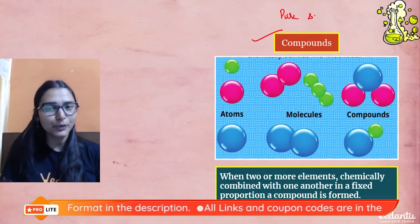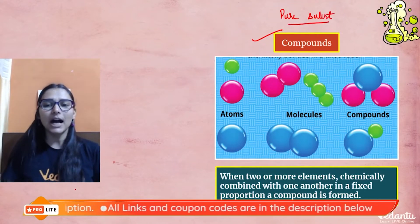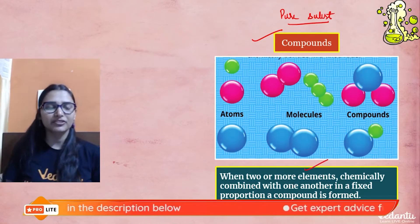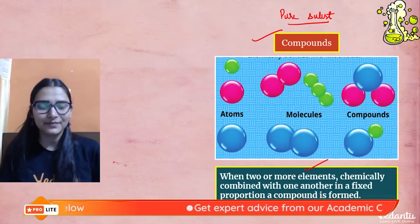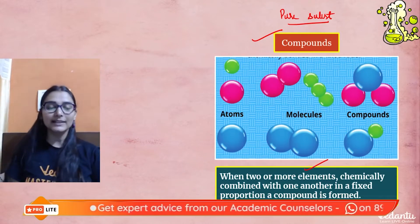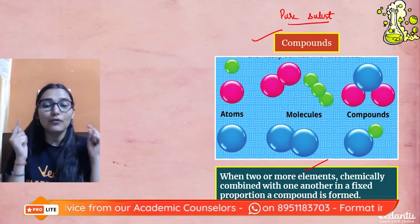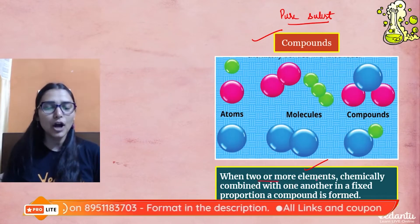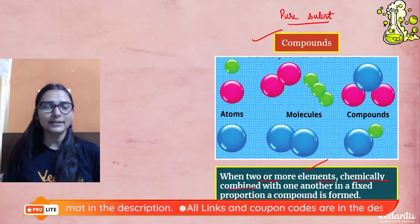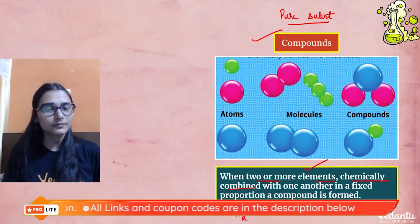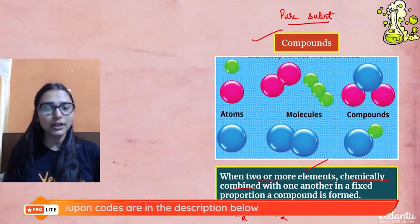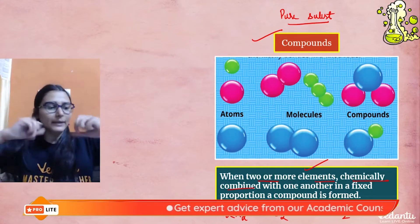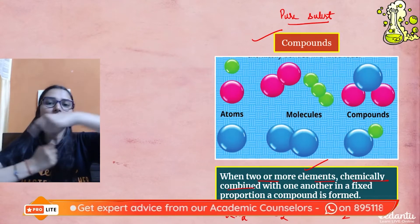Compounds are a class of pure substances in which we have two or more elements. You might ask — if there are different elements, how can they be pure? Yes, they do have different elements, but they are chemically combined in a fixed proportion by mass. For example, water is formed when hydrogen and oxygen chemically combine in a fixed mass ratio.